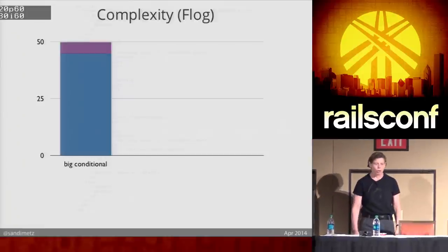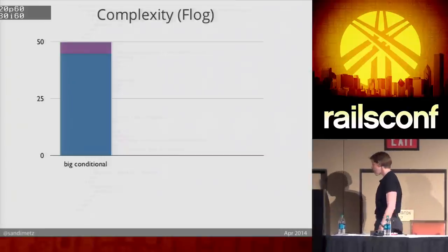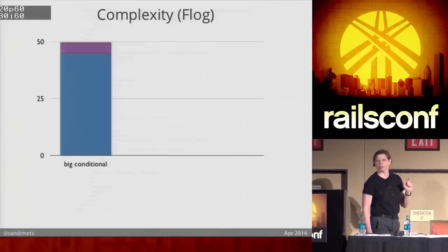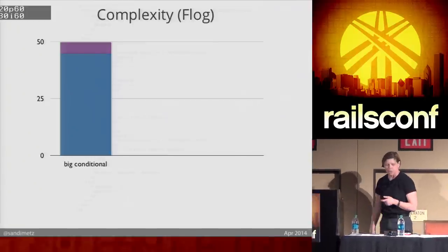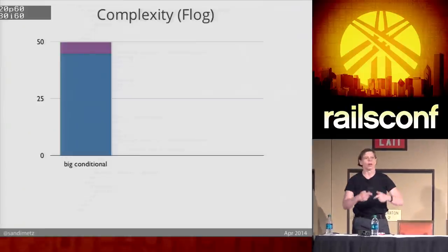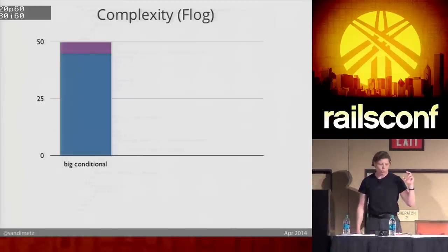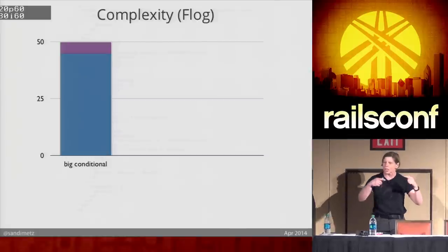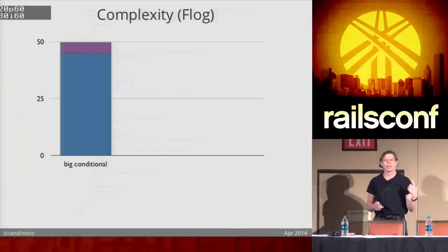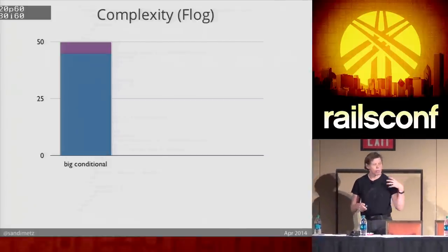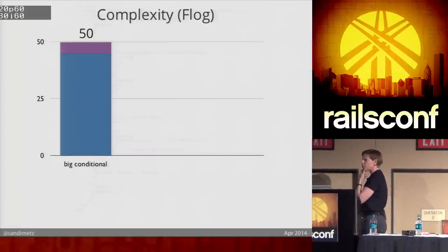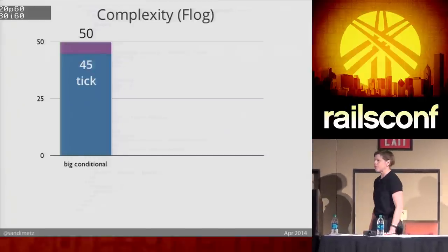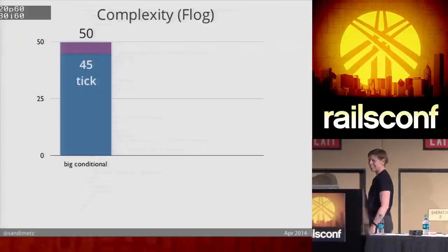FLOG is a metric. What's a metric? A metric is a crowdsourced idea about something. I have my own opinion about how complex this is, but I can use this wisdom-of-the-crowd metric — the FLOG metric — which scores assignments, branches, and conditionals. It just counts things and adds them up. Higher scores are worse; they indicate more complex code that's going to be harder to understand and reason about. FLOG says this Gilded Rose class scored a 50, and that one method, tick, scored a 45.